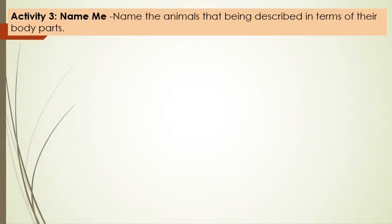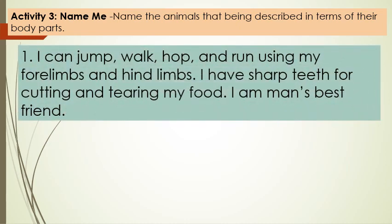Activity 3: Name me. Name the animals that are being described in terms of their body parts. Number 1: I can jump, walk, hop, and run using my forelimbs and hindlimbs. I have sharp teeth for cutting and tearing my food. I am man's best friend. Name the animal.